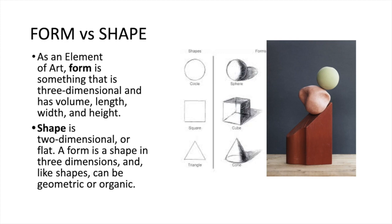This week we are working on folk art. First I want to talk about some different terms we are going to be discussing for this project. Form versus shape: as an element of art, form is something that is three-dimensional and has volume, length, width, and height. While both of these sides are drawings, you can see on this side that these have form because you could measure the length, the width, and the height. Whereas over here, those are shapes — they are two-dimensional or flat. A form is a shape in three dimensions and, like shapes, can be geometric or organic.